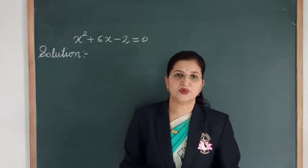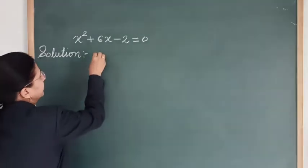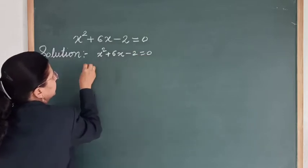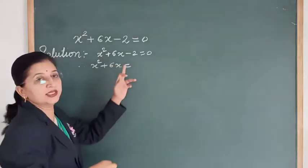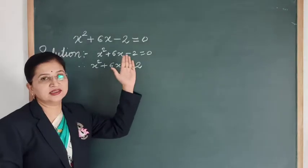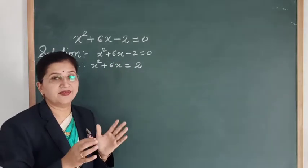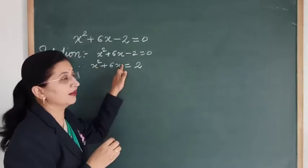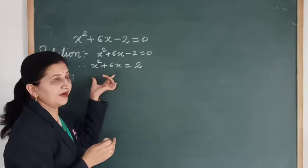In the completing square method, what we do is transfer the constant term to the RHS. So our equation is x² + 6x - 2 = 0. We write x² + 6x, and this negative 2 becomes positive 2 on the RHS. After transferring the constant term, we will try to make the LHS a perfect square. So here we have x² + 6x, and we need to add a third term so that the LHS becomes a perfect square expression.